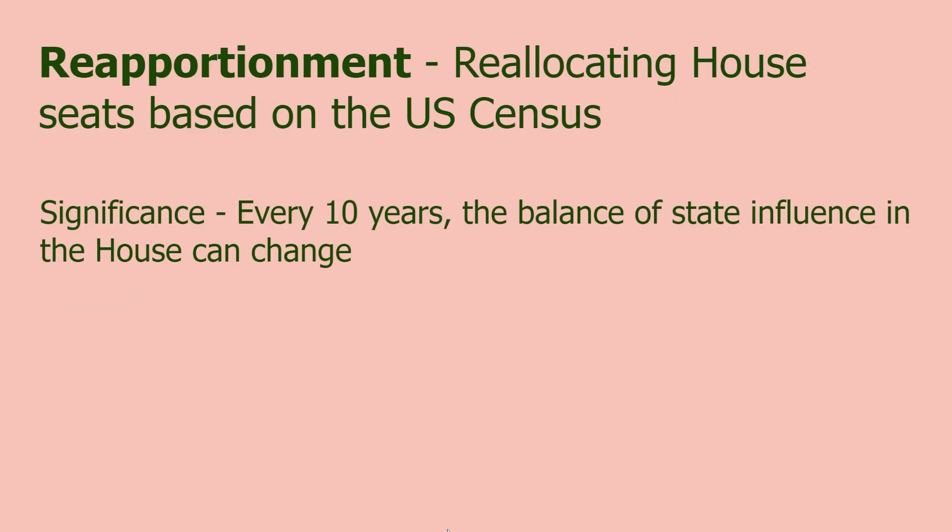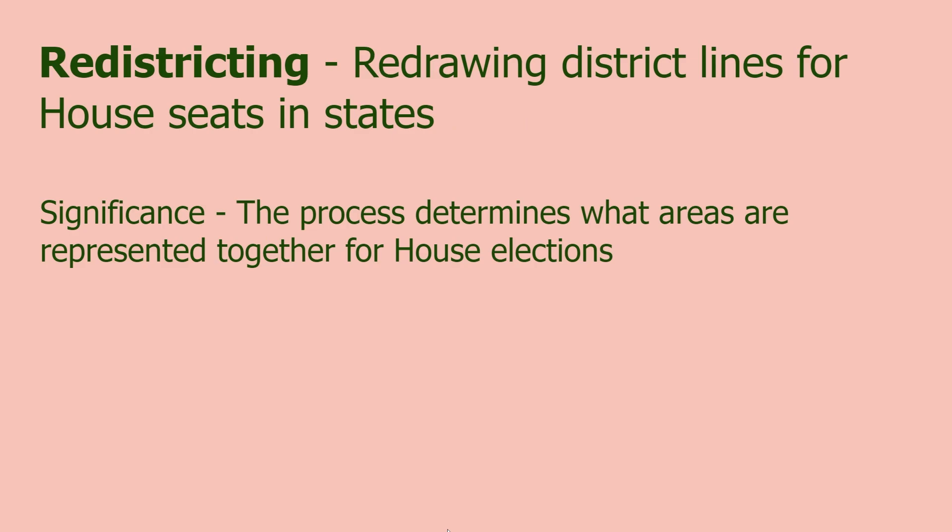Reapportionment: reallocating House seats based on the U.S. Census. Every 10 years, the balance of state influence in the House can change. If states' populations change, some states might gain more seats while other states might lose seats. This just has to do with populations moving as time goes on.